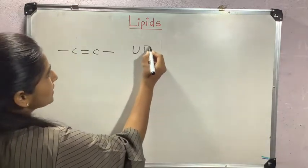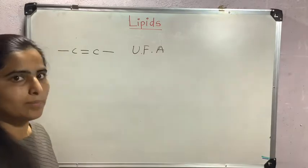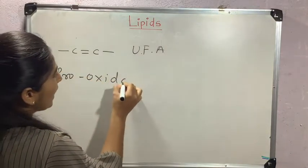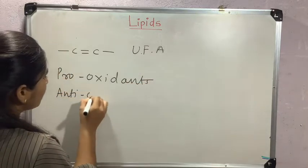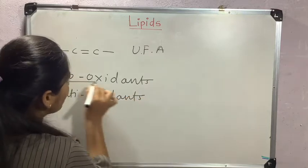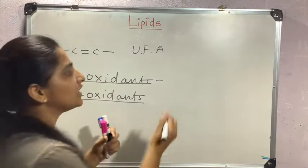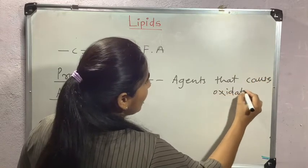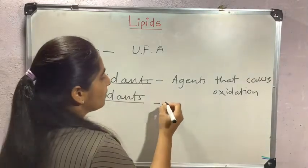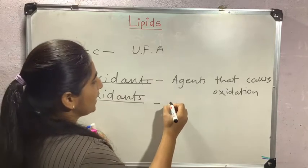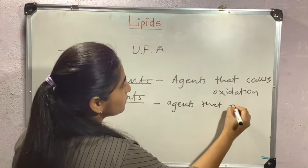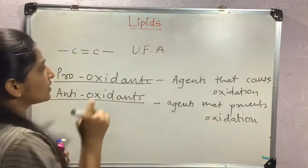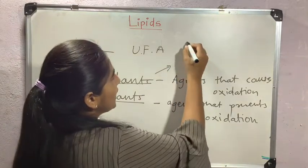There are two important concepts: pro-oxidants and antioxidants. In this video we will discuss pro-oxidants. Pro-oxidants are agents that cause oxidation, while antioxidants are agents that prevent oxidation.